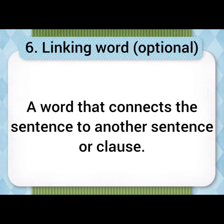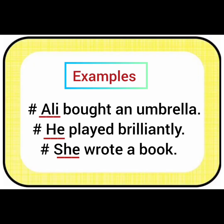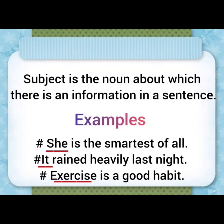Now the question is, what is a subject? It is usually considered the doer of the action — the one who performs an action. For example, 'Ali bought an umbrella.' Ali is the doer of the action, the performer, and it is known as subject. 'He played brilliantly' — he is the subject. 'She wrote a letter' — she is the performer. Subject is also the noun about which there is information in a sentence. 'It rained heavily last night' — it is the subject. 'Exercise is a good habit' — exercise is the subject.